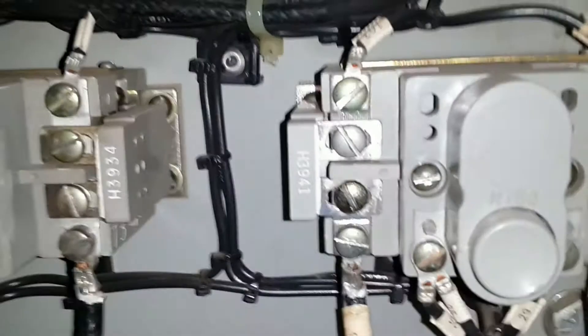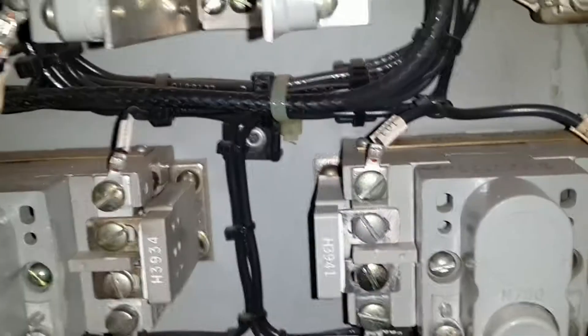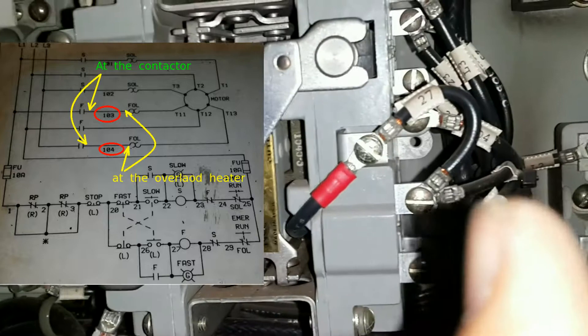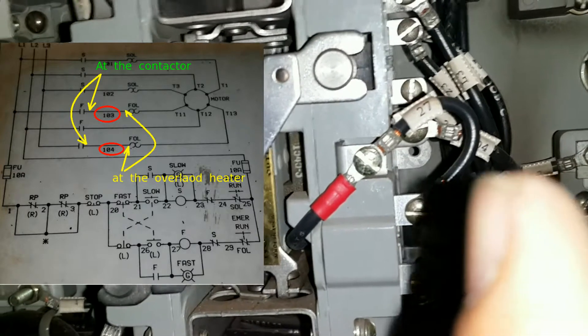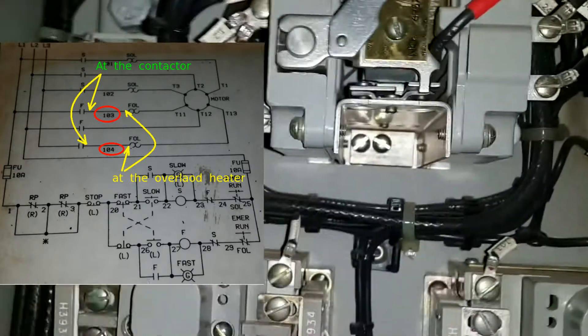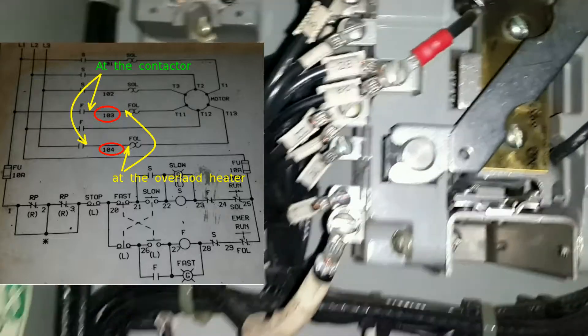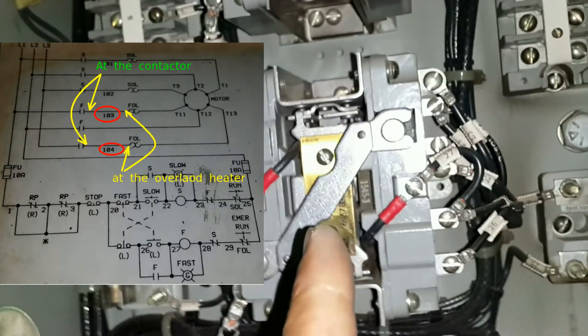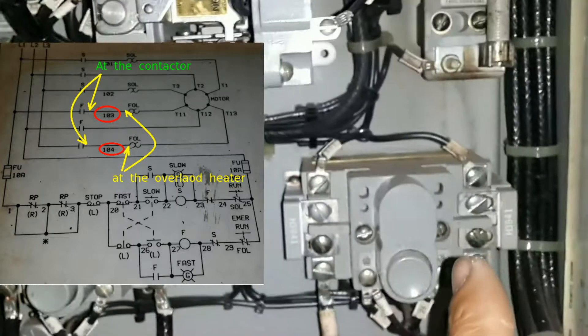The overloads: the top over here, so we got this one, this one over here, we got 104 and 103. That means it's associated with the contactor right there, 104. I cannot see 103 on the back of it, but the fact that 104 is over here means that the cables from here are going into this overload here.